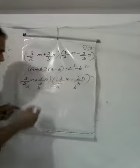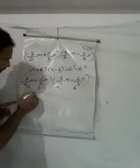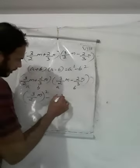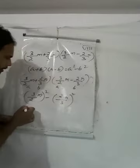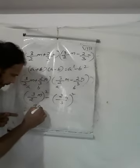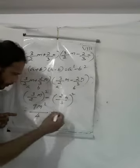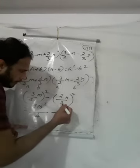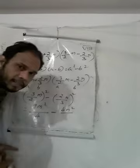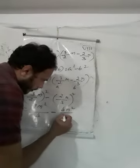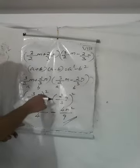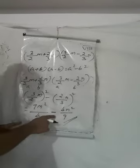A square minus B square. So what you can write: A square means 3/2 M whole square, minus B square means 2/3 M whole square. That equals 9M square by 4, minus 4N square by 9.